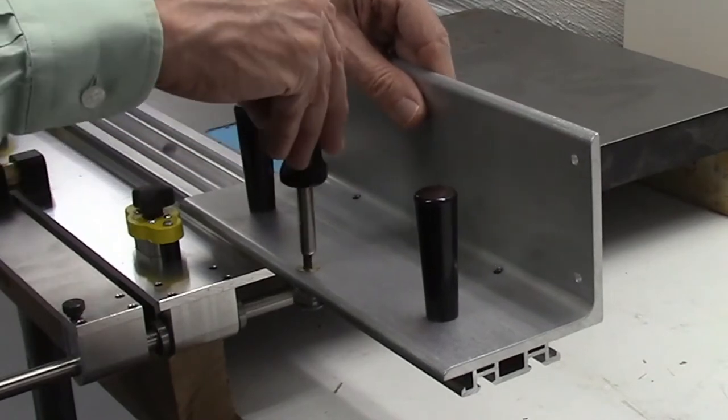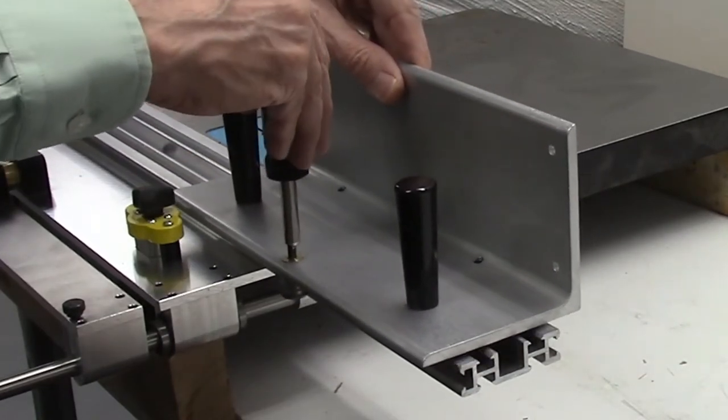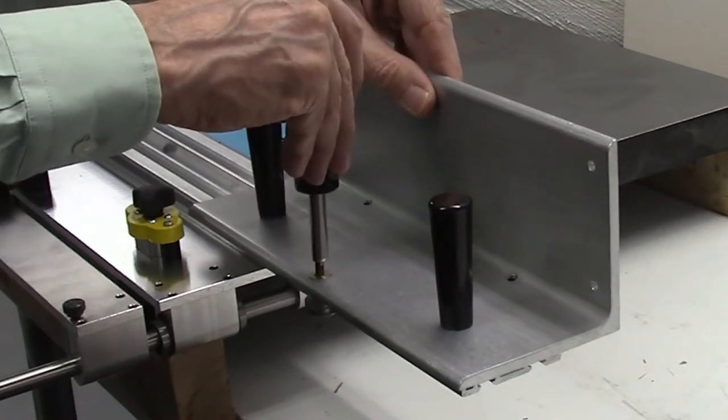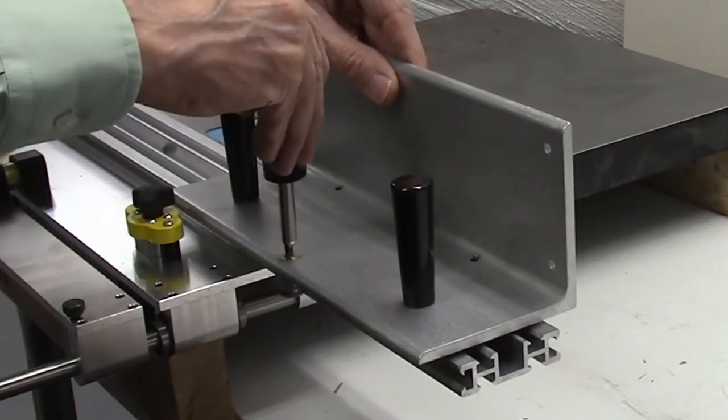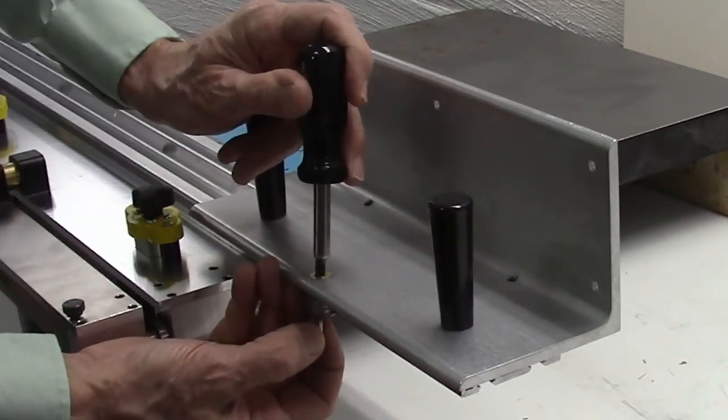And now you can see there's a lot of slop in this, but if all I do is just turn this slightly, that slop goes away. So what I need to do is turn this to a position I like, with reasonable tension, and then tighten the Allen screw on the bottom.